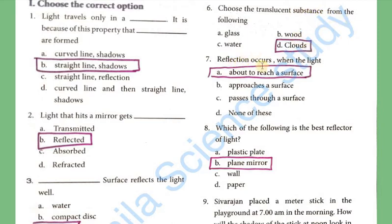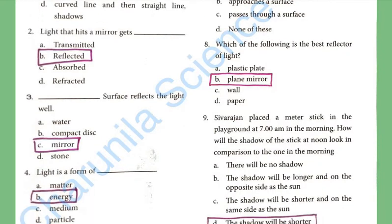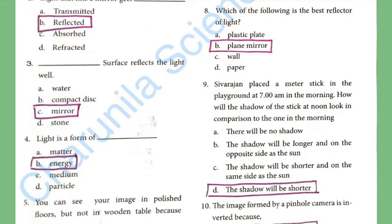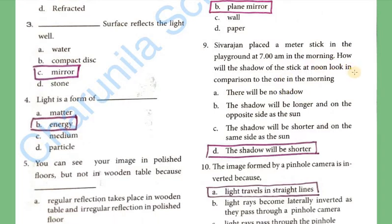Seventh: reflection occurs when the light is about to reach a surface. Eighth: Which of the following is the best reflector of light? — Plane mirror. Ninth question: Sivarajan placed a mirror stick in a playground at 7 AM. How will the shadow at noon compare to the one in the morning? The shadow will be shorter.